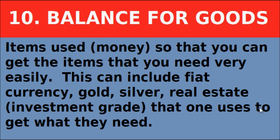Number ten is balance of goods — the items used, i.e., money, so that you can get the items from the other nine categories easily. This can include fiat currency, gold, silver, and investment-grade real estate used to generate what you need. Investment-grade real estate means property you buy to sell or rent for profit — not the house you live in, which goes into shelter. If you buy gold and silver, you're really just changing the particulars within category number ten.